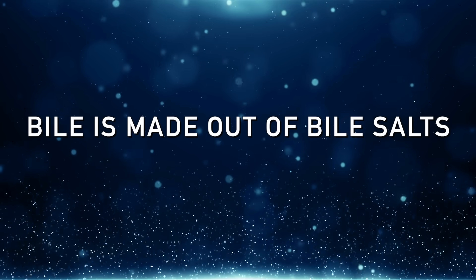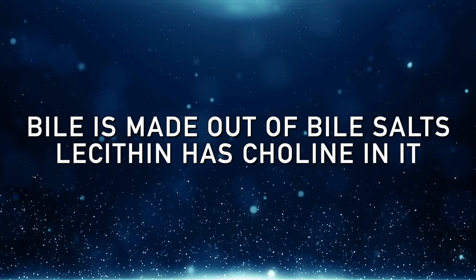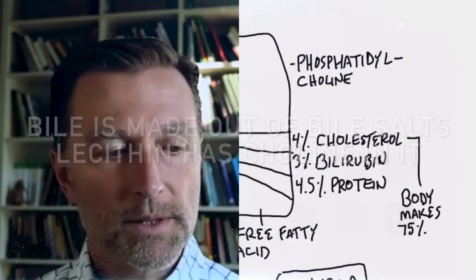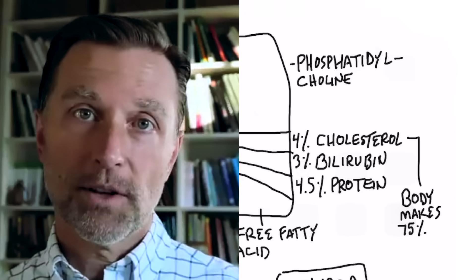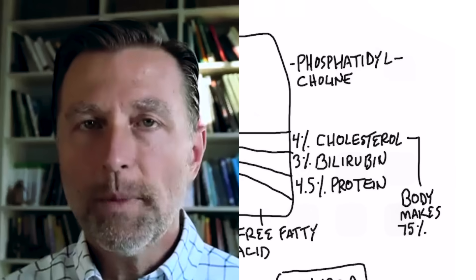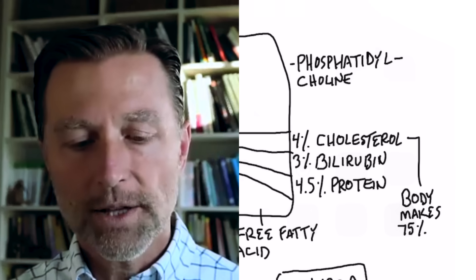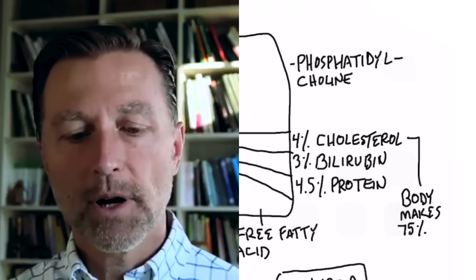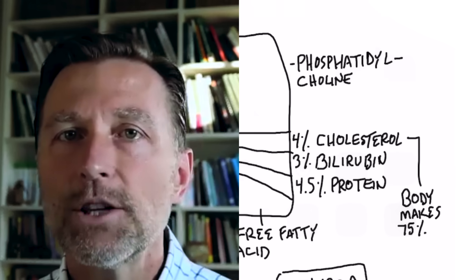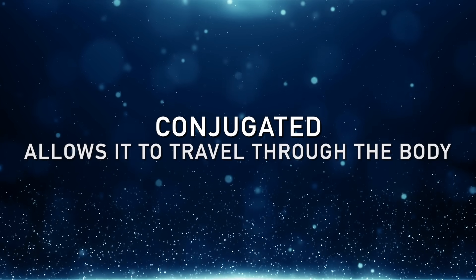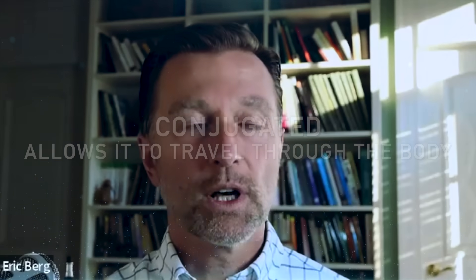So bile is made out of bile salts and lecithin, which has choline in it. Bile is also made up of cholesterol, and that's really how bile salts are created — from cholesterol. If there's too much cholesterol and not enough bile salts, that's when you get gallstones. We also have bilirubin, which is the end product of red blood cells, and a little bit of protein. These are transported through the body — that term is called conjugated — in a very similar way to cholesterol being attached to a protein, which is called a lipoprotein.